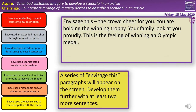Our final paragraph: 'Envisage this. The crowd cheer for you. You're holding the winning trophy. Your family look at you proudly. This is the feeling of winning an Olympic medal.' Again, we might put that last sentence after our next two sentences. Two to three minutes — write your extra sentences and press play once you've finished. Not many adjectives in here. The crowd cheer for you — well, how are they cheering? Triumphantly? Passionately? What kind of crowd? The immense crowd, the plethora of people. We really want a lot more depth and interesting vocabulary here. Use words from your retrieval sheet — synonyms for interested or beautiful. 'Mesmerising' would be great there. Think carefully about every single word you're using and make every word count.